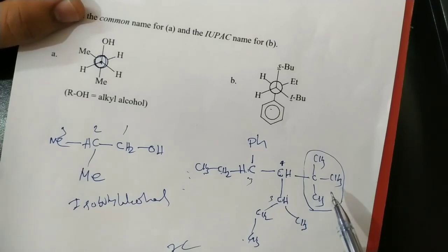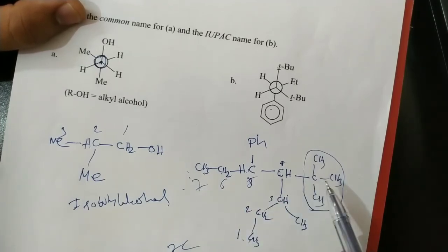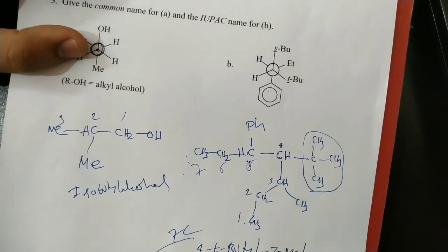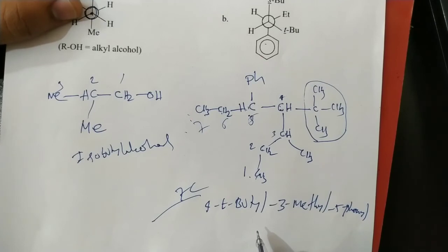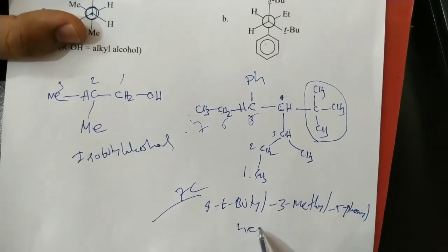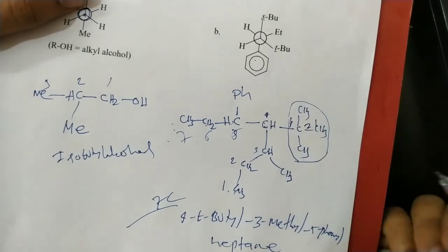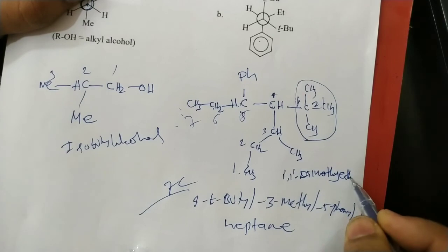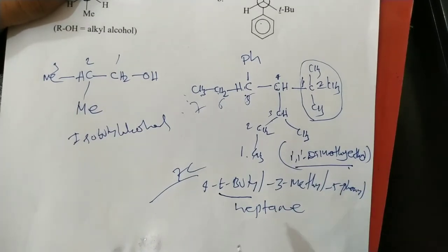On the fourth carbon there is a tertiary butyl group and on the third carbon there is a phenyl group. Methyl comes before phenyl alphabetically, so numbering gives: 5-methyl, 3-methyl and 4-tertiary butyl. The full IUPAC name is 4-tertiary butyl-3-methyl-5-phenylheptane. The complete systematic name replaces tertiary butyl with 1,1-dimethylethyl, giving 4-(1,1-dimethylethyl)-3-methyl-5-phenylheptane.